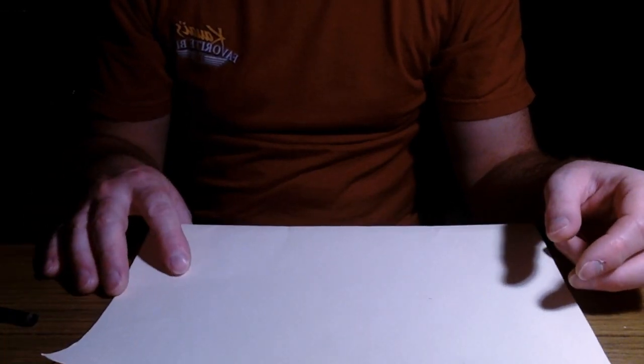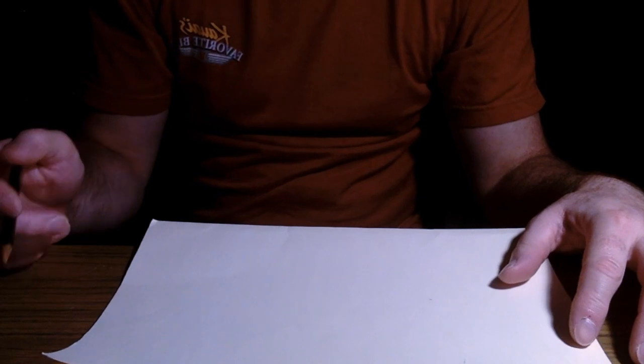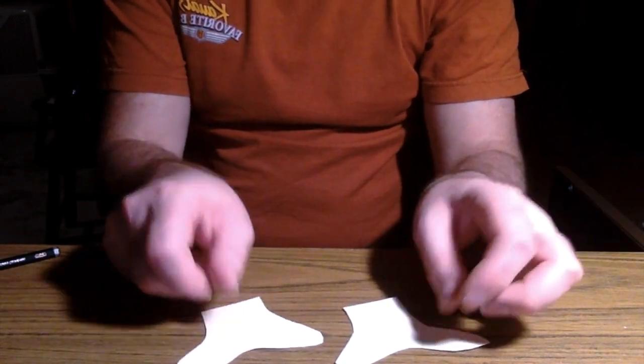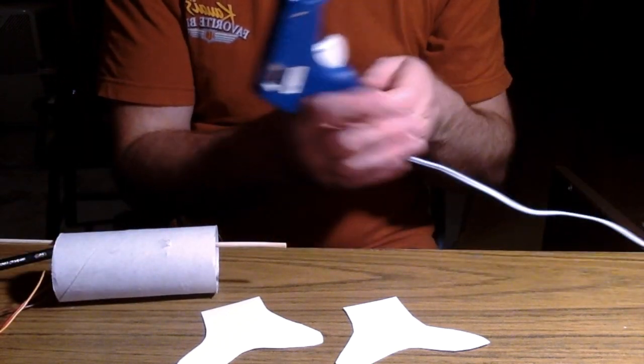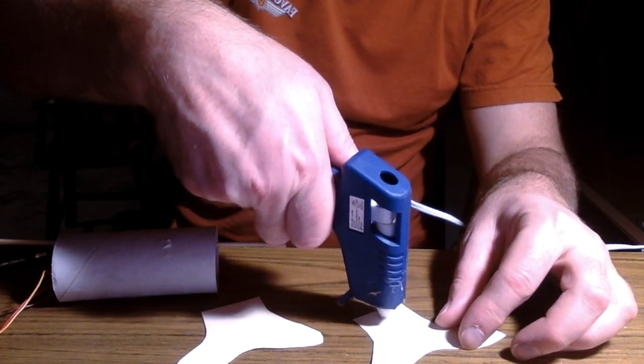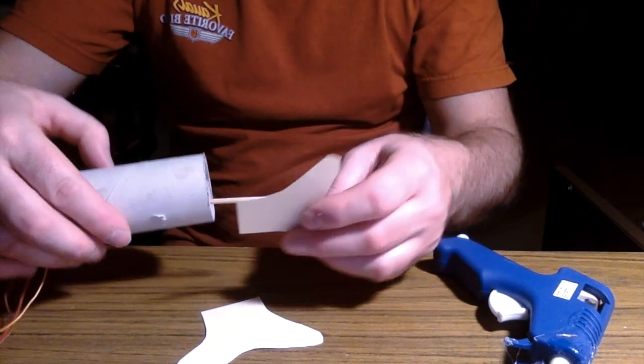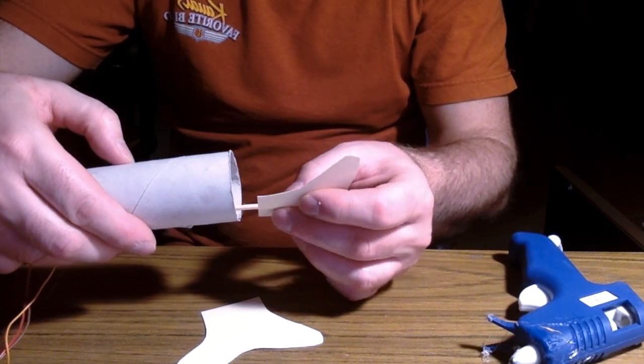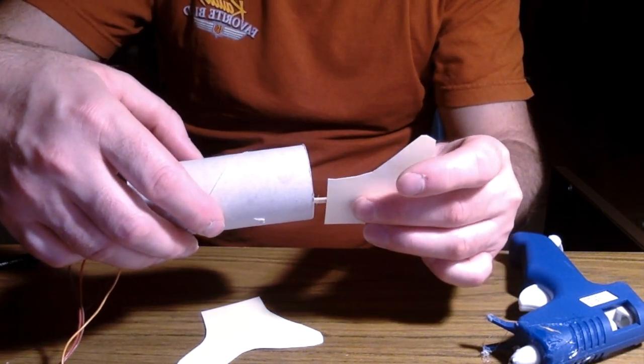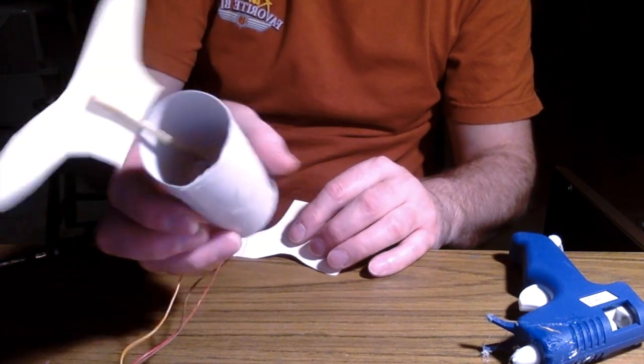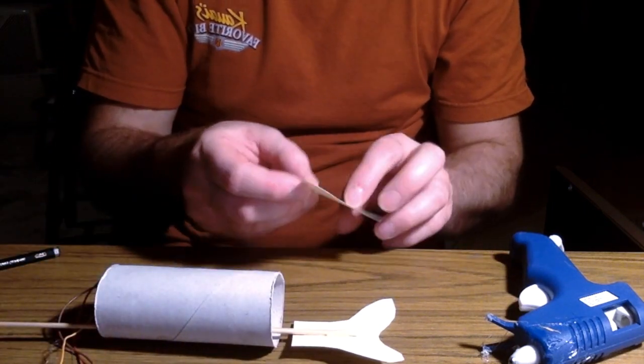I'm actually going to use an old file folder because they're pretty sturdy, and I'm gonna make my tail and my mouth out of that. I got my two tails, so let's just glue them onto the skewer. There's one, so now my fish has a tail. I'm gonna put one on the other side as well just so it looks a little better.